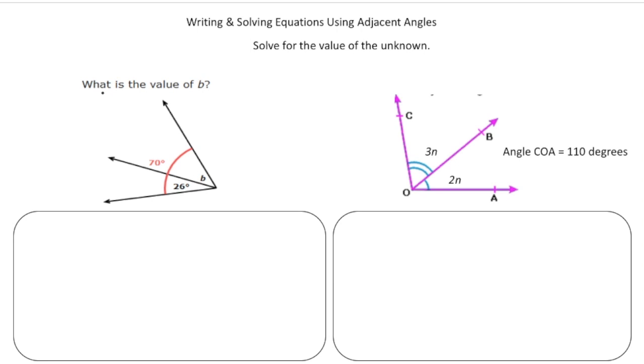So the first one, they want us to figure out the value of B. So B is just this angle right here. And angle B and 26 degrees add up to the 70 degrees. So angle B and the 26 degrees, those are the two adjacent. So our equation is going to be B plus 26 degrees together add up to 70 degrees. Now we're just going to solve by taking away 26. And when we do that, we get B equals 54 degrees.